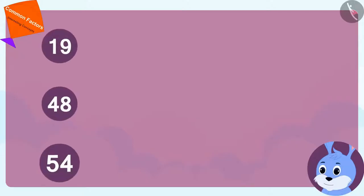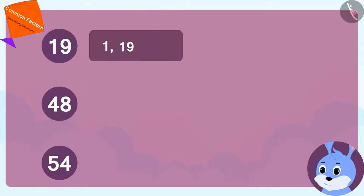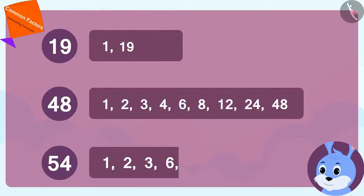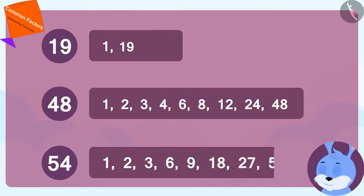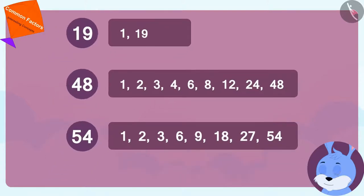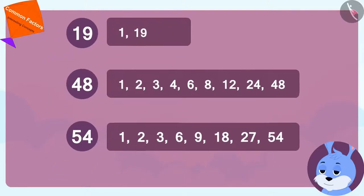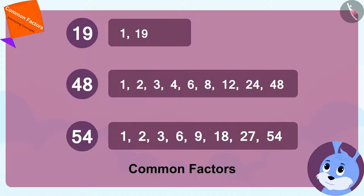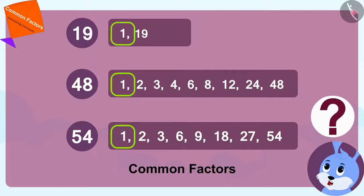To find a solution to this question, Bunny first wrote the factors of the three numbers. Now, Bunny is trying to find the common factors of these numbers. Bunny is thinking there is only one common factor of these numbers — one.